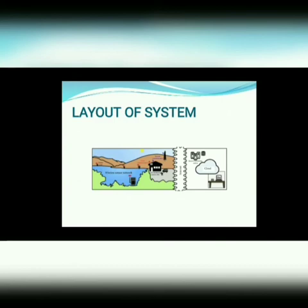Now let's see the actual layout of the system. In this diagram we can see the remote monitoring station, wireless sensor network, local monitoring station, and different nodes placed at different places.